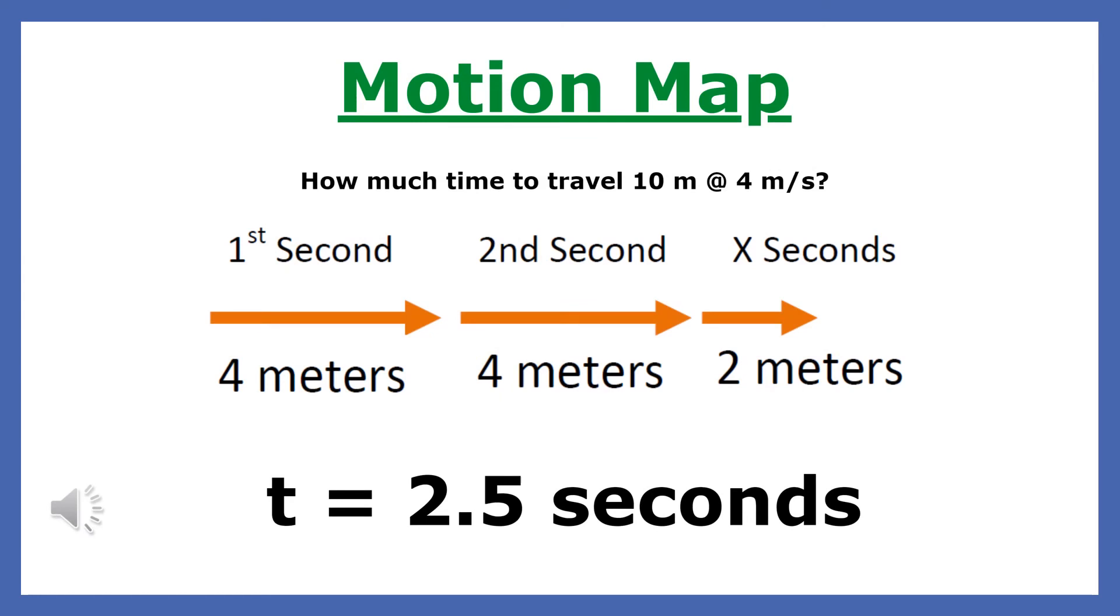Now let's look at this problem without the equation. The object travels 4 meters per second for 10 seconds. In 2 seconds, it travels 8 meters. The last 2 meters would take only a half a second. When you total the time, you get the same answer we got using the equation. Remember, you'll only get credit if you solve the problems using the equation, substituting with units, and answering with units. The method we just used is a good way to check if your answer makes sense.